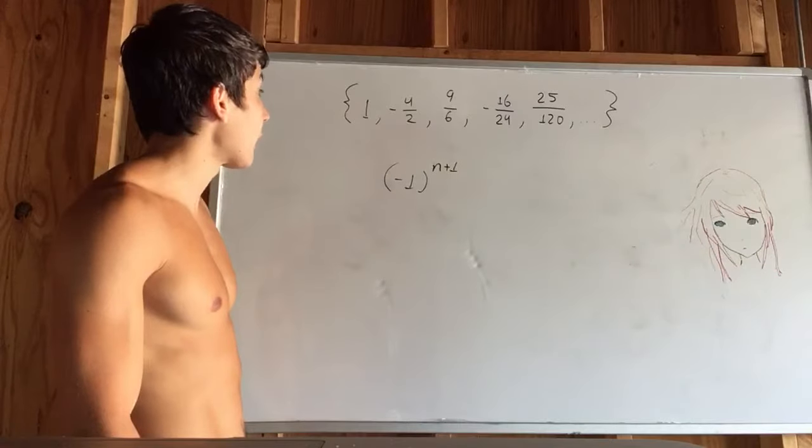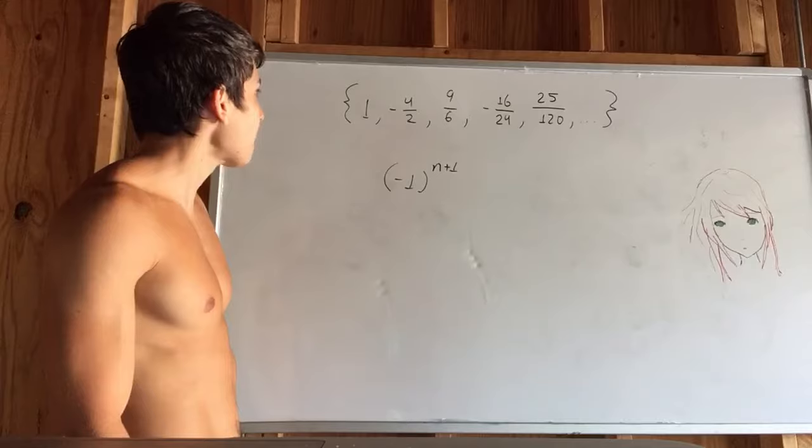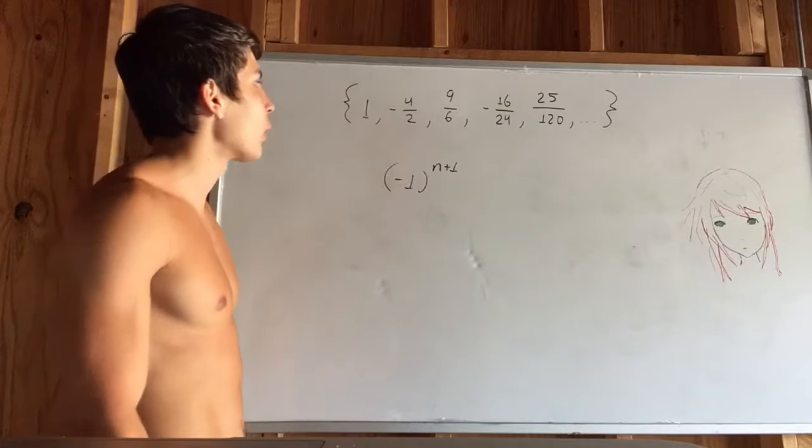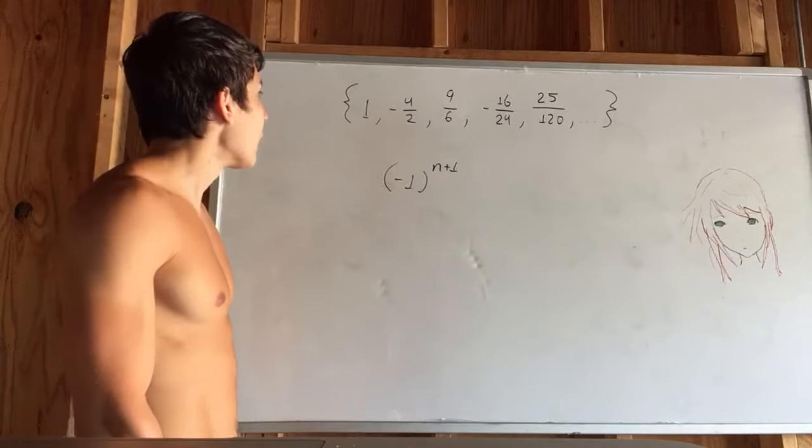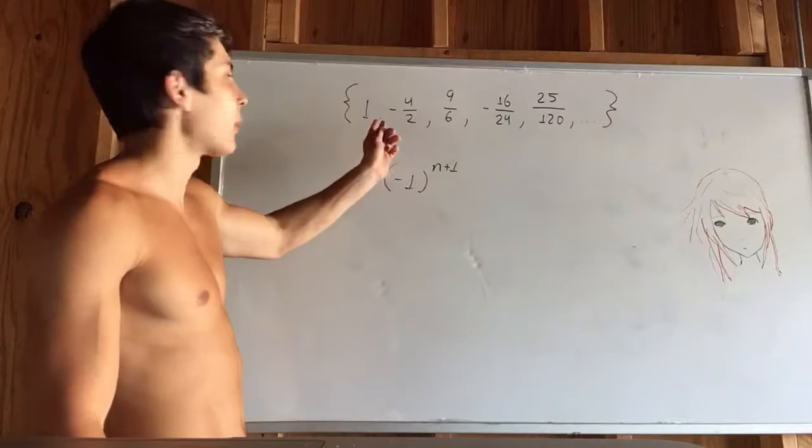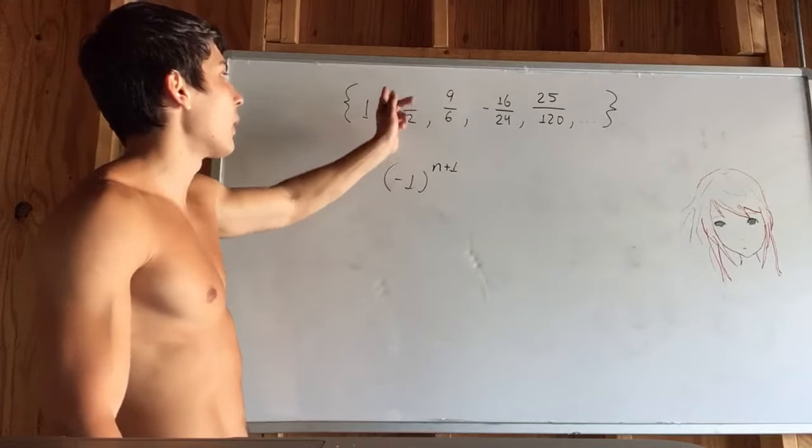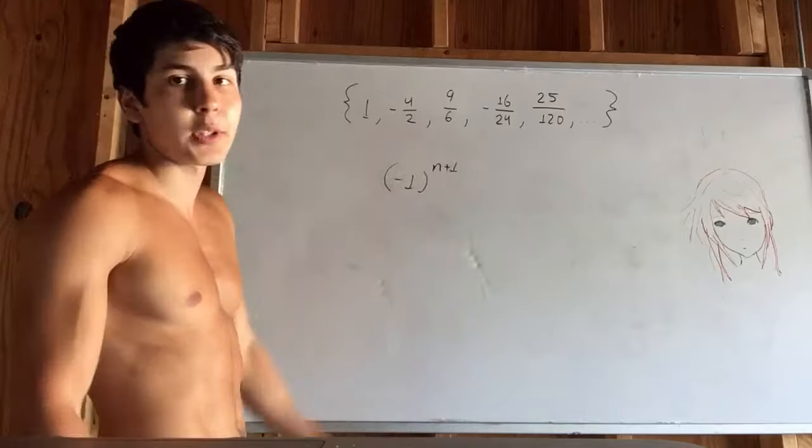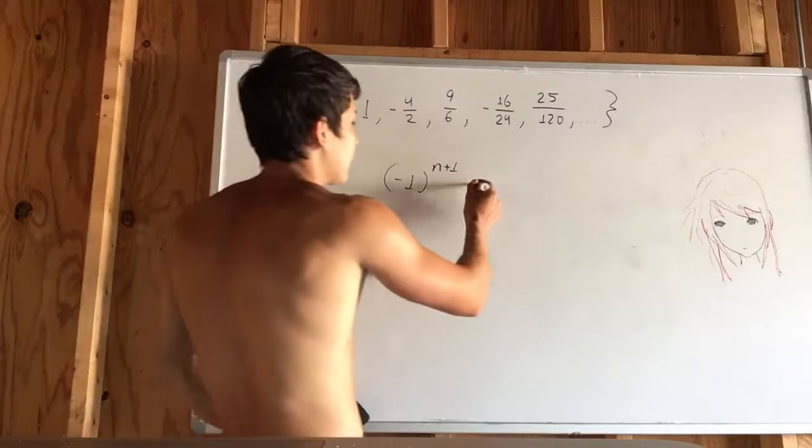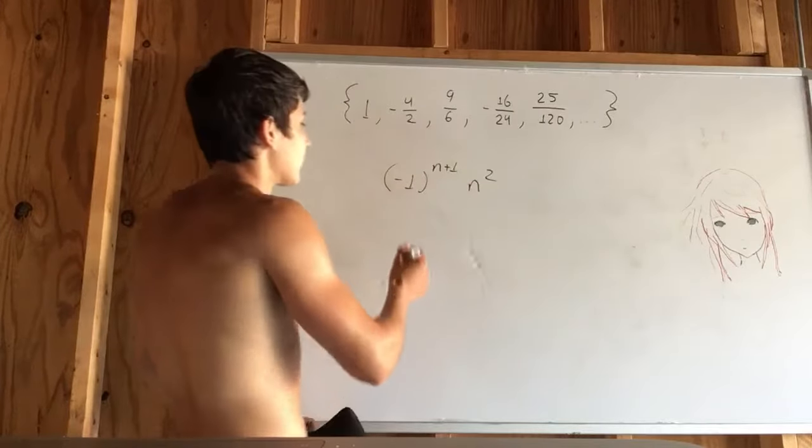Okay, so we've got our first part, which is easy. Now we look at our numerator. What's happening in the numerator? Well, I think this is an easy pattern, right? We have n squared. We have 1, then 4, then 9, then 16, then 25. That should just be recognized, n squared.